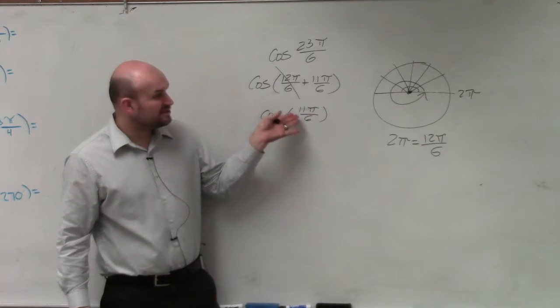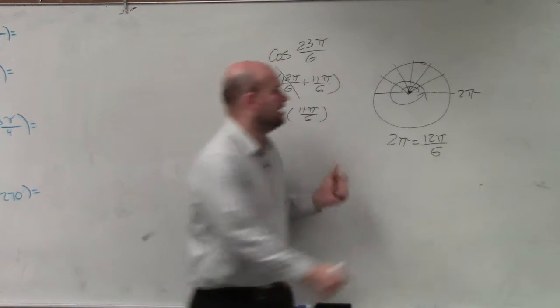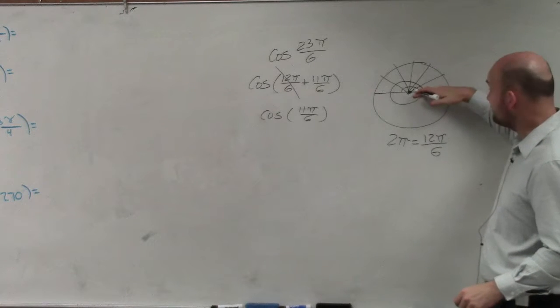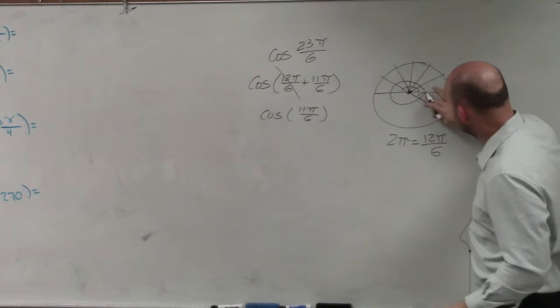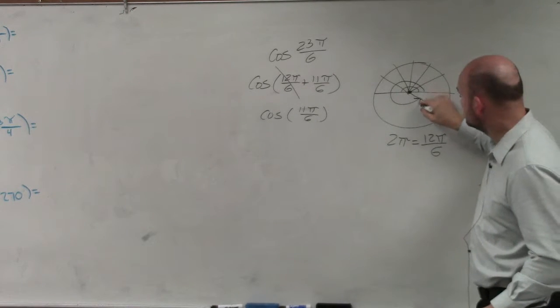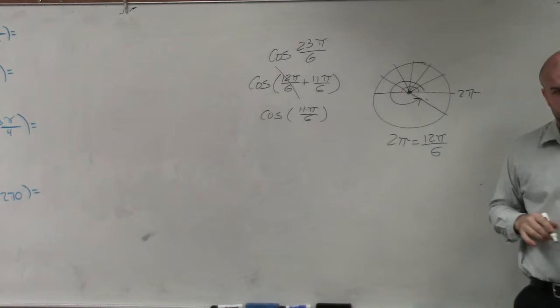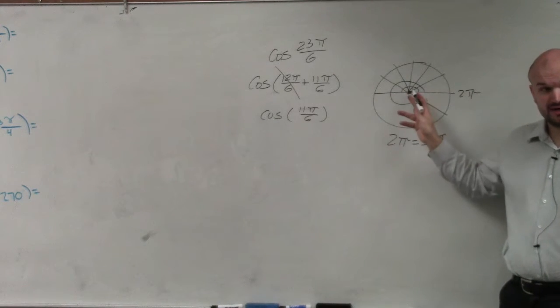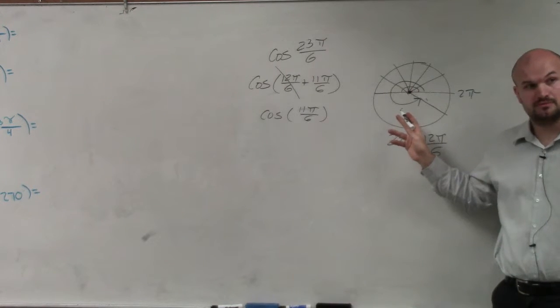So all I really need to do is just calculate 11π over 6. Well, if I know 12π over 6 is all the way around, 11π is just going to be 1 little sixth short. All the way around is 12π. So if you're at 11π, you're just 1 π over 6 short.